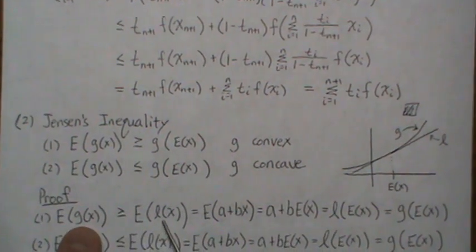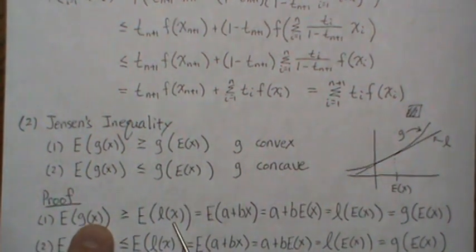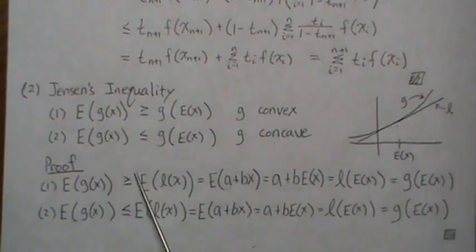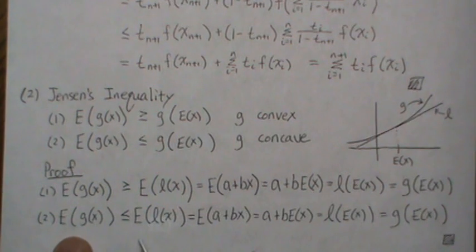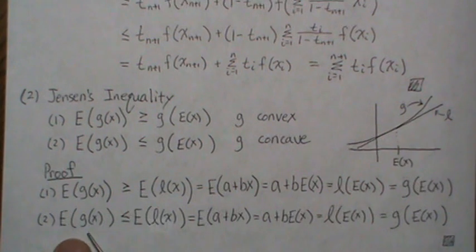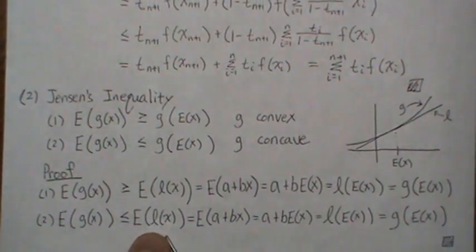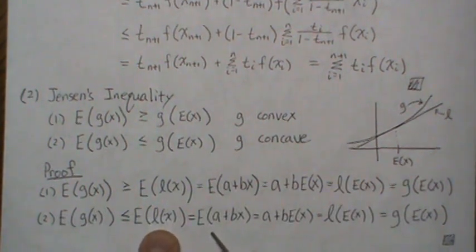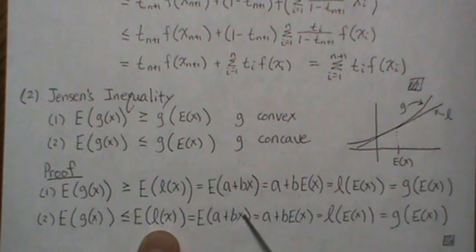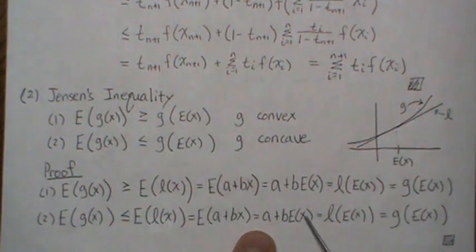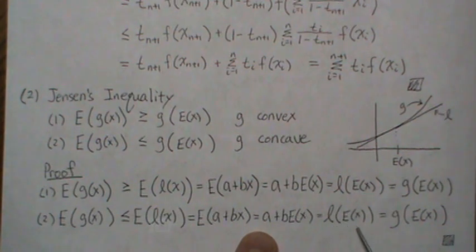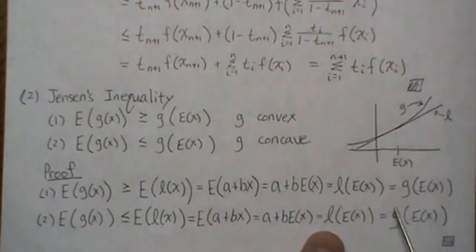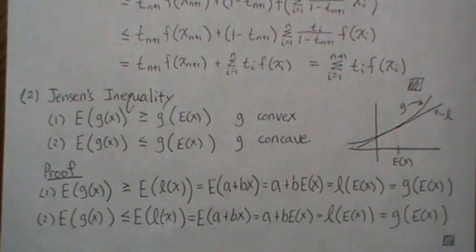Since the tangent line L(x) is the tangent line of G at E[x], evaluating L at E[x] equals G(E[x]). So the inequality holds: E[G(x)] ≥ G(E[x]). For the concave case, the bowl is facing down and the tangent line is always above it, so E[G(x)] ≤ E[L(x)] = a + b*E[x], and since L is tangent to G at E[x], that equals G(E[x]), giving E[G(x)] ≤ G(E[x]).